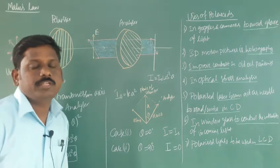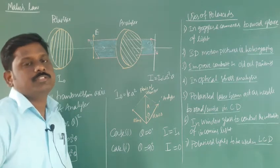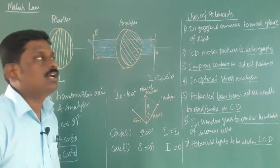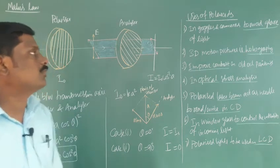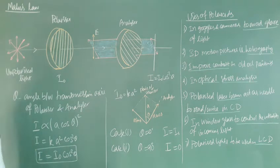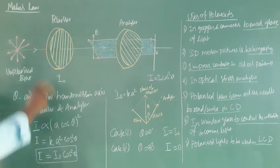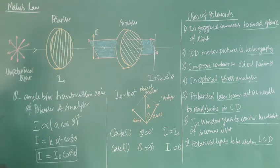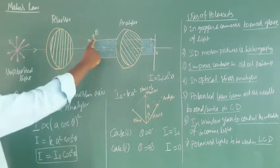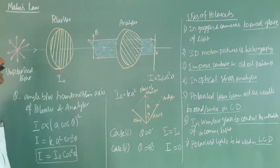Good morning students. In this class we are going to discuss Malus's Law and the uses of polaroids. Consider unpolarized light placed behind the polarizer. The unpolarized light becomes plane polarized after passing through the polarizer P1.